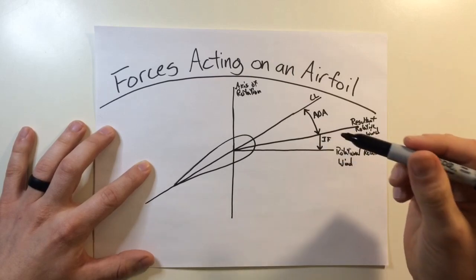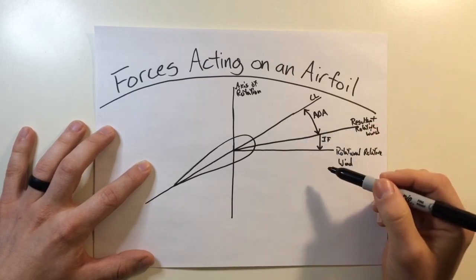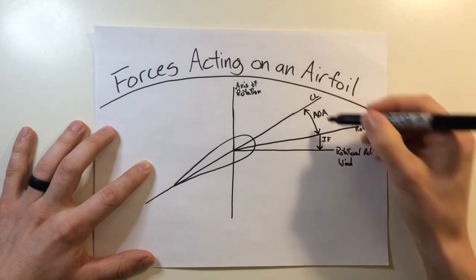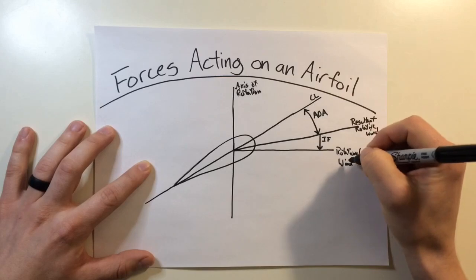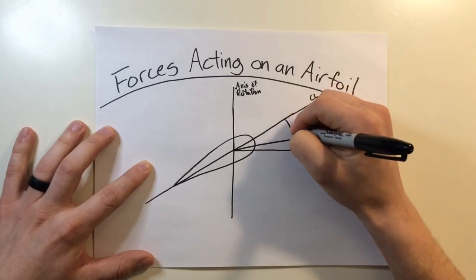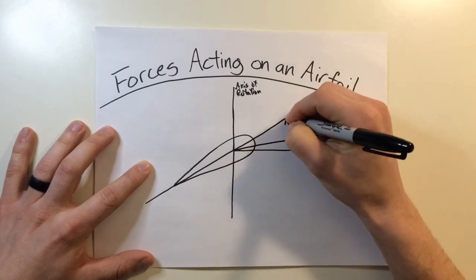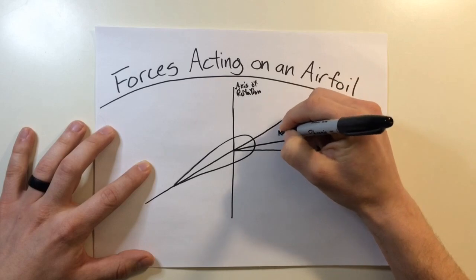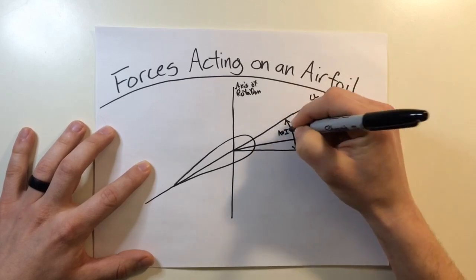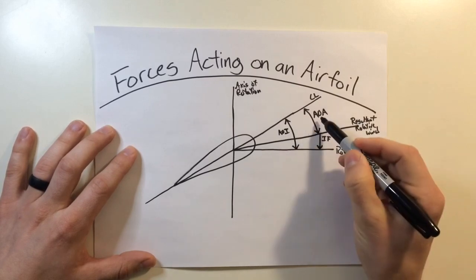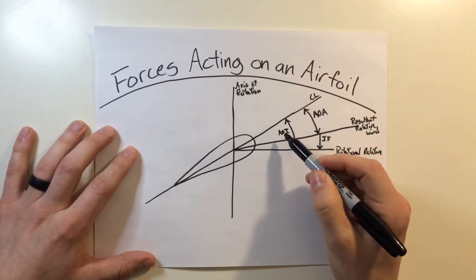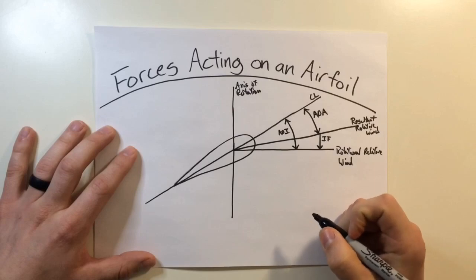Now the difference between the cord line and the rotational relative wind is going to be our actual pitch angle. This angle of attack, we don't directly affect. But this angle between the cord line and the rotational relative wind, we do affect. So this angle right here is our angle of incidence. Now this is usually confused fairly often, the difference between angle of attack and the angle of incidence. So I'll just kind of talk about that a little bit more.